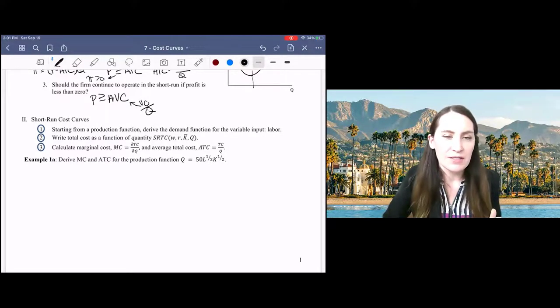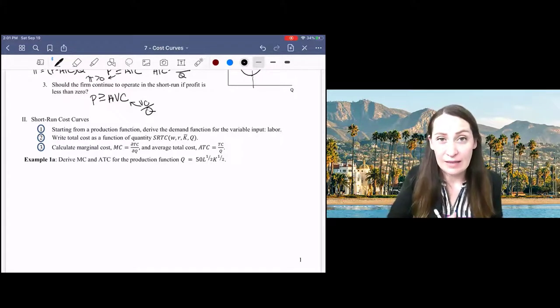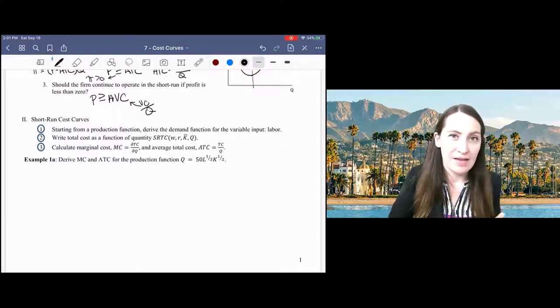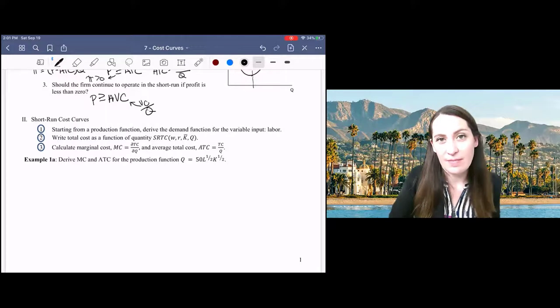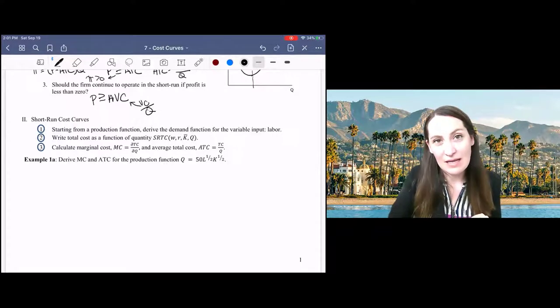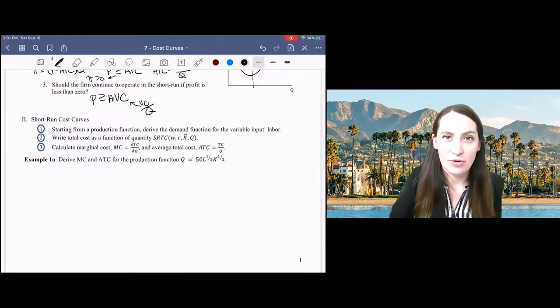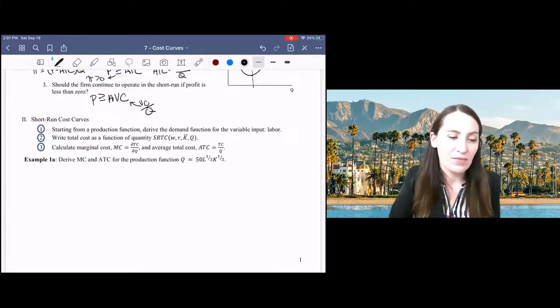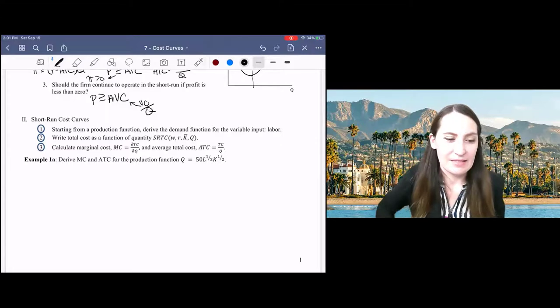So we're going to take our production function and we're going to get short run labor demand holding constant capital. Then we'll use our labor demand function to rewrite our total cost as a function of quantity and we'll calculate marginal cost and average total cost using that new total cost function. All right, so let's get started.